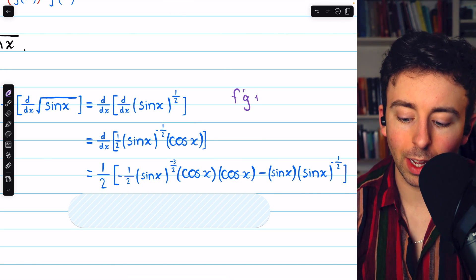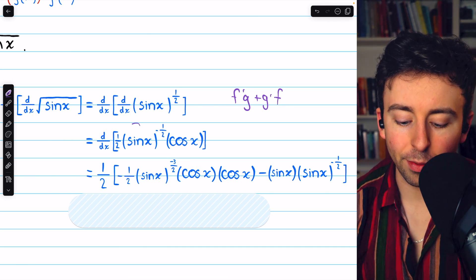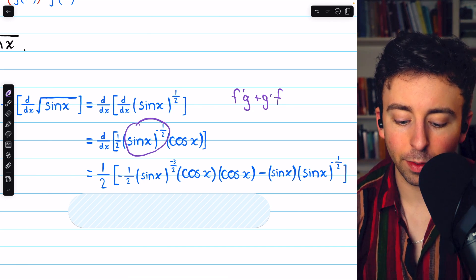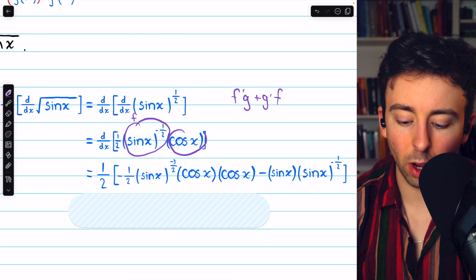f prime g plus g prime f. Let's say that f is sine x to the negative half, and g is cosine x.